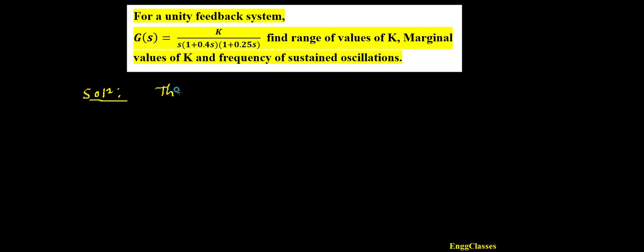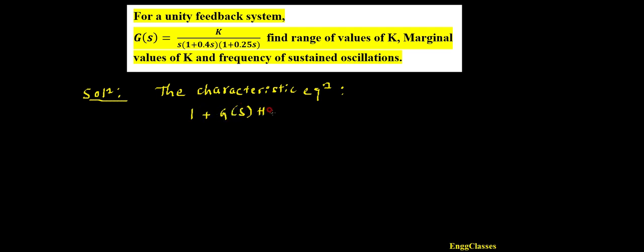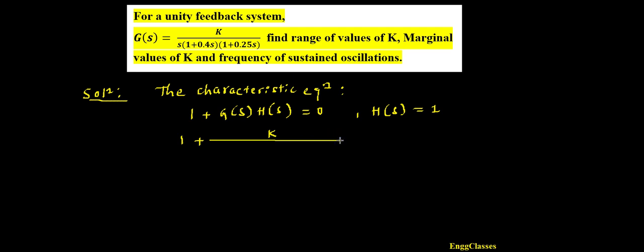First, let me write the characteristic equation. The characteristic equation is 1 + G(s)H(s) = 0. Since this is a unity feedback system, H(s) = 1. So we have 1 + G(s) = 0, where G(s) = k divided by s(1 + 0.4s)(1 + 0.25s).